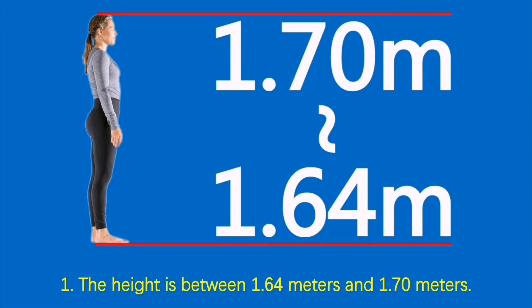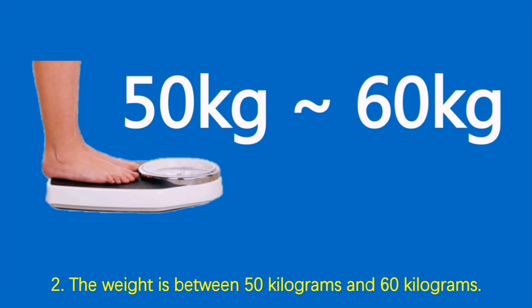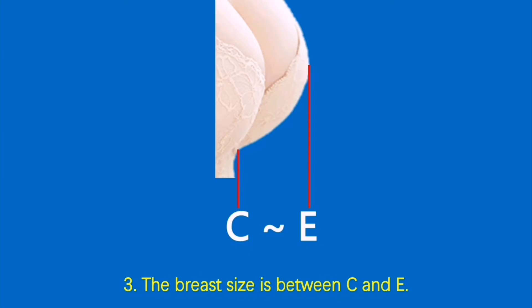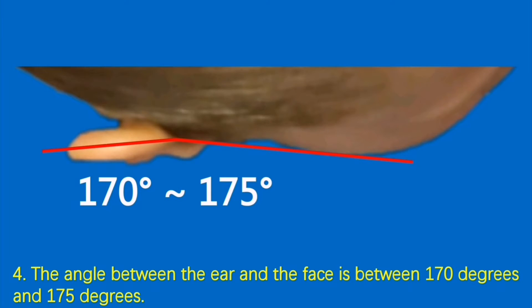Condition 1: Height is between 1.64 meters and 1.70 meters. Condition 2: Weight is between 50 kilograms and 60 kilograms. Condition 3: Breast size is between C and E. Condition 4: The angle between the ear and the face is between 170 degrees and 175 degrees.